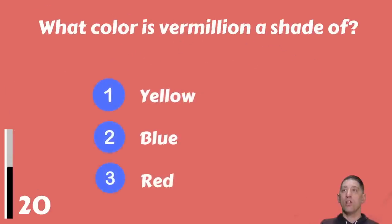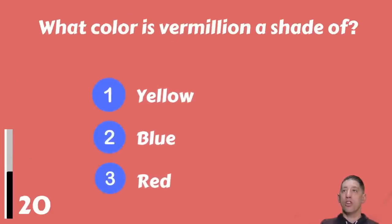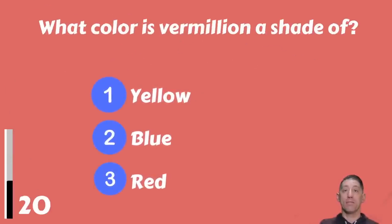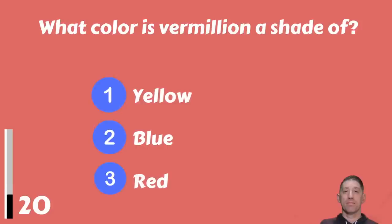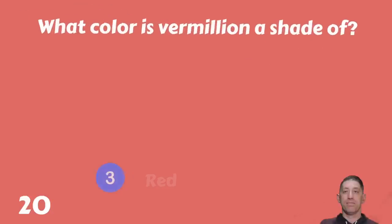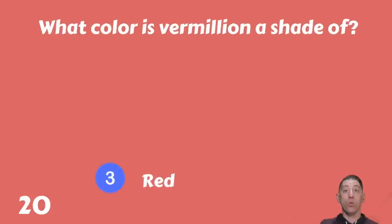What color is vermilion — a shade of yellow, blue, or red? The answer is red.